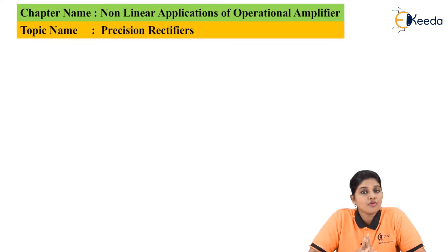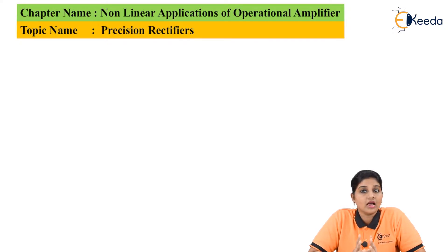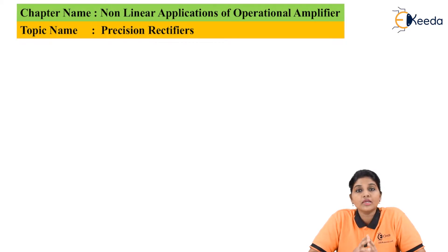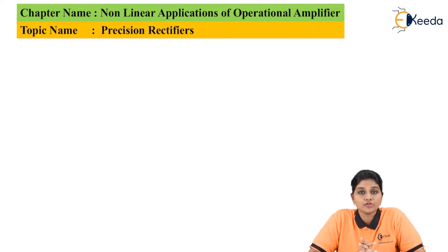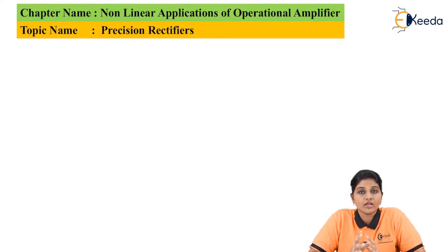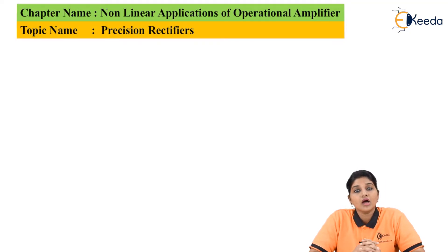In case of half wave rectifier, the rectifier produces only half cycle at the output. Whereas in case of full wave rectifier, the complete AC input signal is rectified at the output and we get positive half cycles in each positive as well as negative half cycle of the input signal.